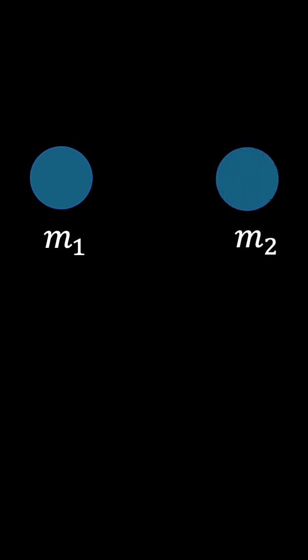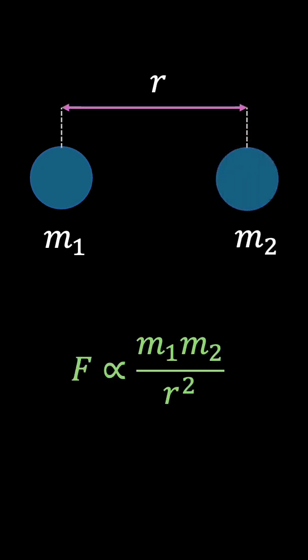According to Newton's universal law of gravitation, any object with mass m1 will gravitationally attract another object with mass m2 with a force that's proportional to the product of their masses and inversely proportional to the square of the distance between them.